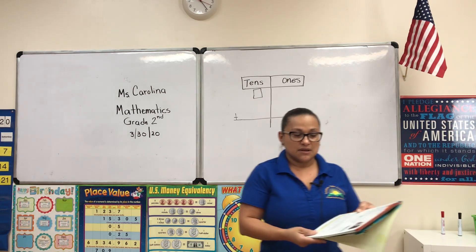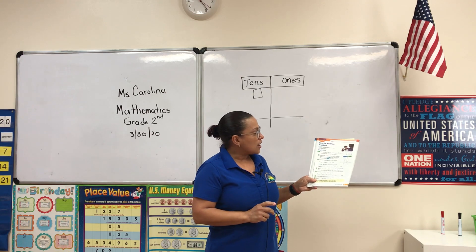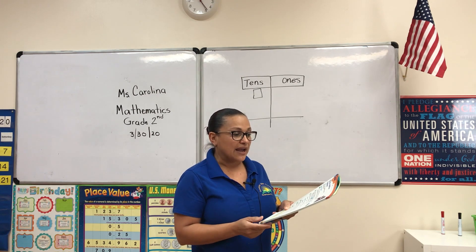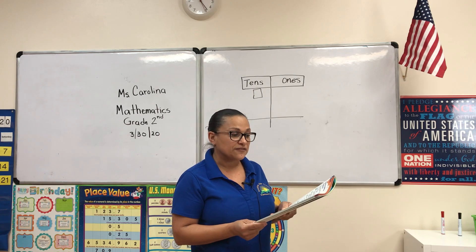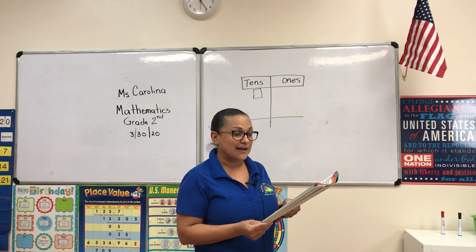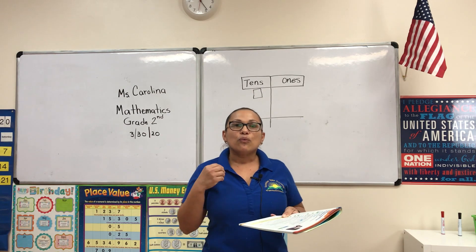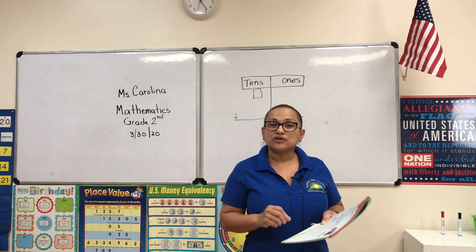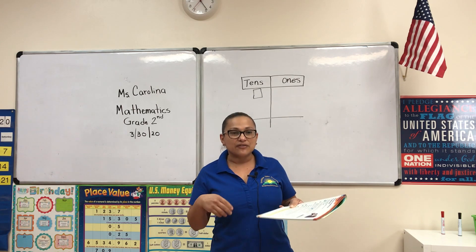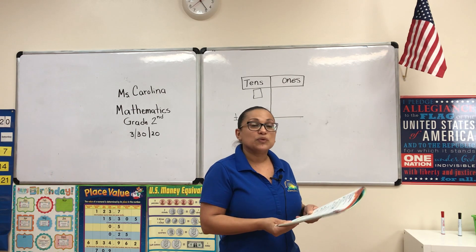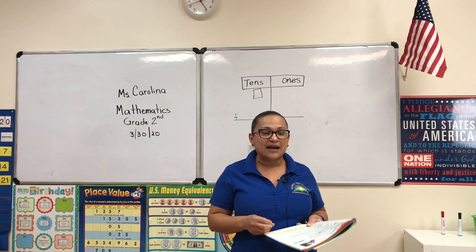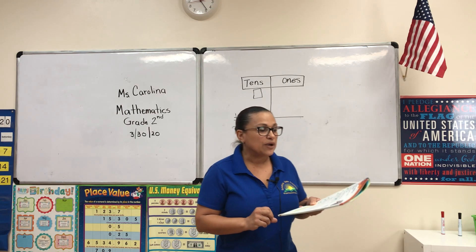Ken counts 57 toy cars. Larry counts 25 toy cars. How many toy cars do they count? The main numbers here are 57 and 25, and we're going to add them up to see how many cars they have altogether.